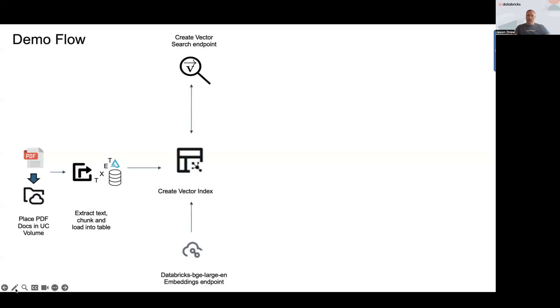The way this demo is going to go is that we're going to be placing document PDFs within a UC volume. Once we do that we need to extract the text from that document, put it into chunks, and load it into a table. From there we're going to create a vector search endpoint, and in conjunction with an embedding model included with Databricks — in this particular example the Databricks BGE Large EN embedding model — we will create a vector index.